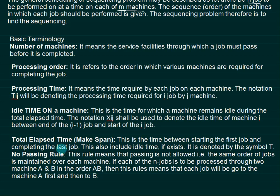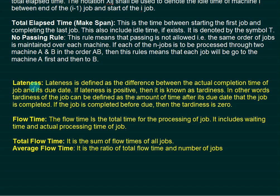Elapsed time, also called makespan, is the time between the starting of the first job and the completing of the last job. The no-passing rule means that passing is not allowed — the same order of jobs must be maintained over each machine. For example, if we get the order ABCDEF, that same order must be performed on every other machine. Each job goes to machine A first, then machine B, then machine C if required.